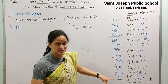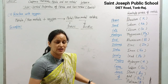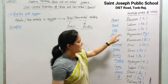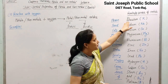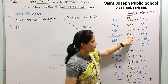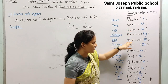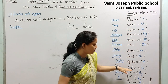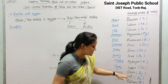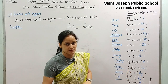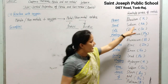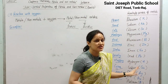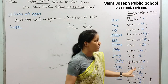In this reactivity series, the metals listed starting from the top are: potassium (K), sodium (Na), calcium (Ca), magnesium (Mg), aluminium (Al), zinc (Zn), iron (Fe), lead (Pb), hydrogen (H), copper (Cu), silver (Ag), and gold and platinum. Their symbols are also mentioned with a blue marker.